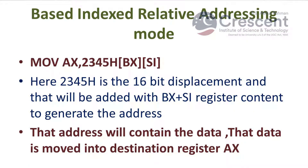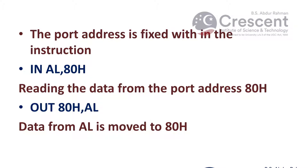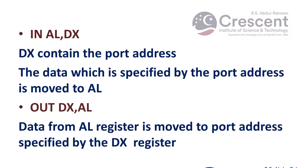The next type of addressing mode is input/output port addressing, which has two types: fixed port addressing and variable port addressing. In fixed port addressing, the port address is fixed within the instruction. For example, IN AL, 80H — this instruction moves the data available at port address 80H into AL register. Another example is OUT 80H, AL — this moves the value in AL register into port address 80H.